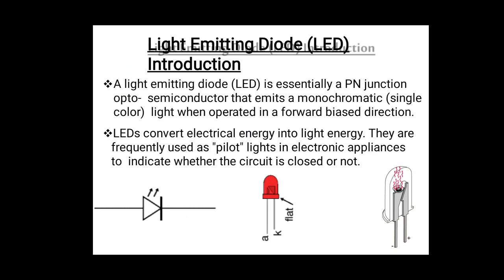So what is LED? LED is nothing but a light emitting diode. LED is essentially a PN junction diode which emits monochromatic light — that is, single color light — when it operates in forward-biased conditions. Forward-biased conditions means when we apply voltage between the leads, current starts flowing in the circuit. This LED converts electrical energy into light energy.